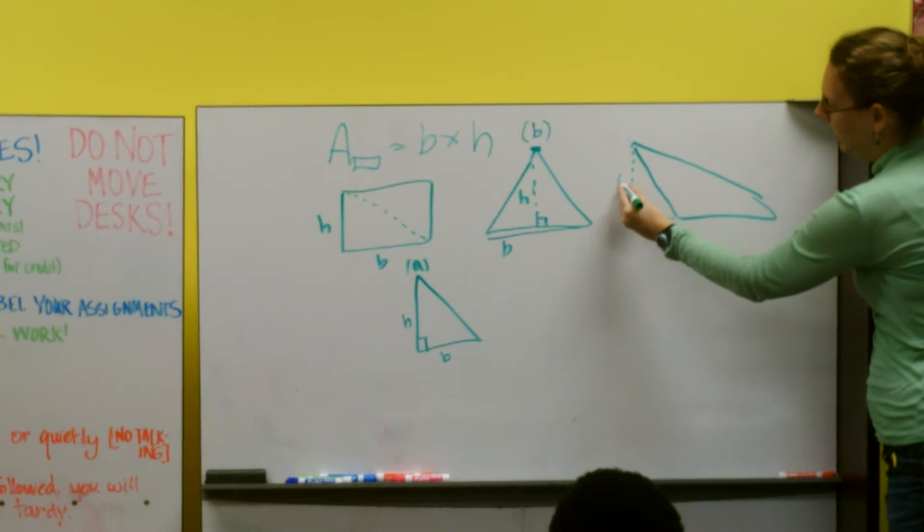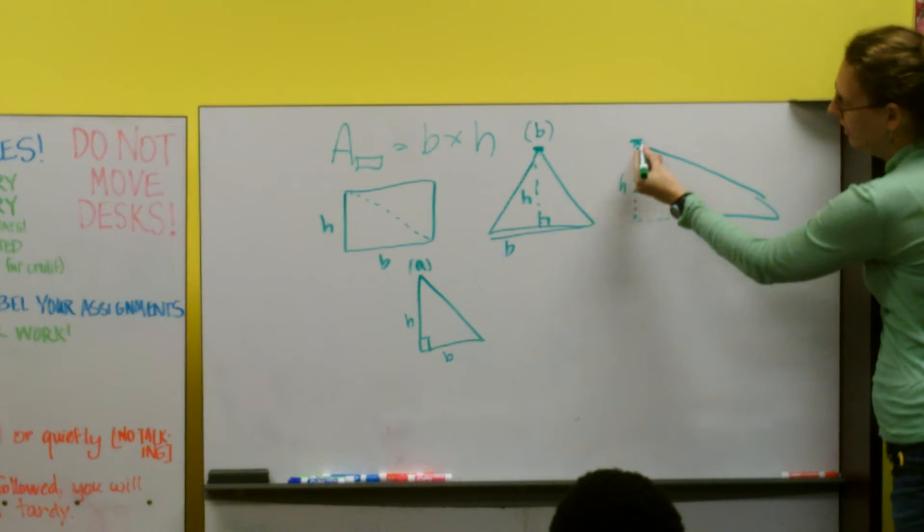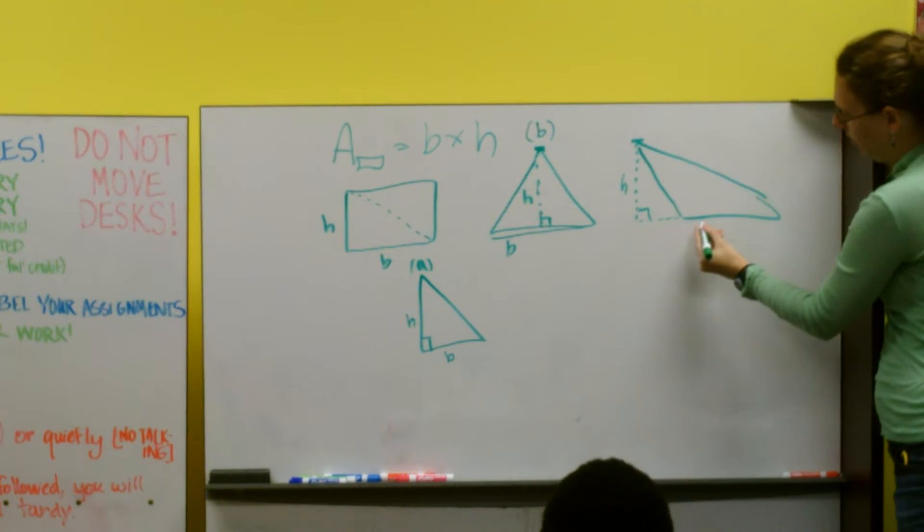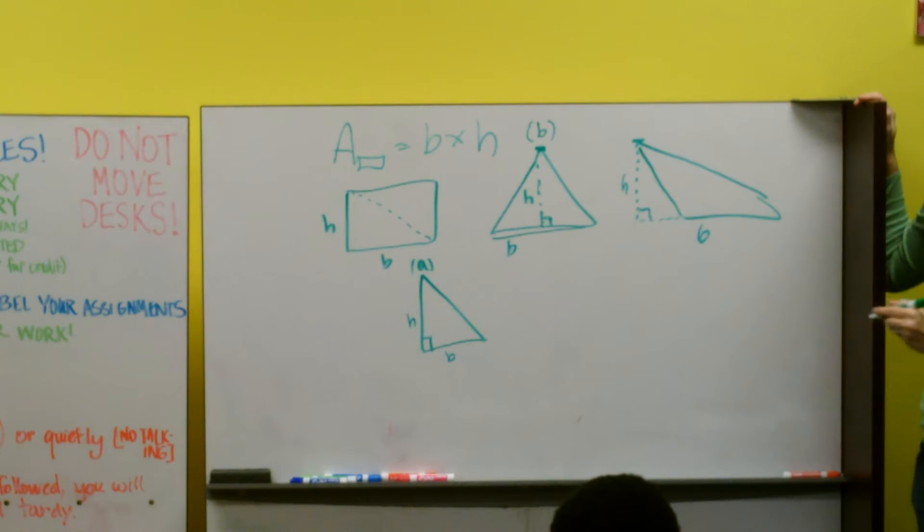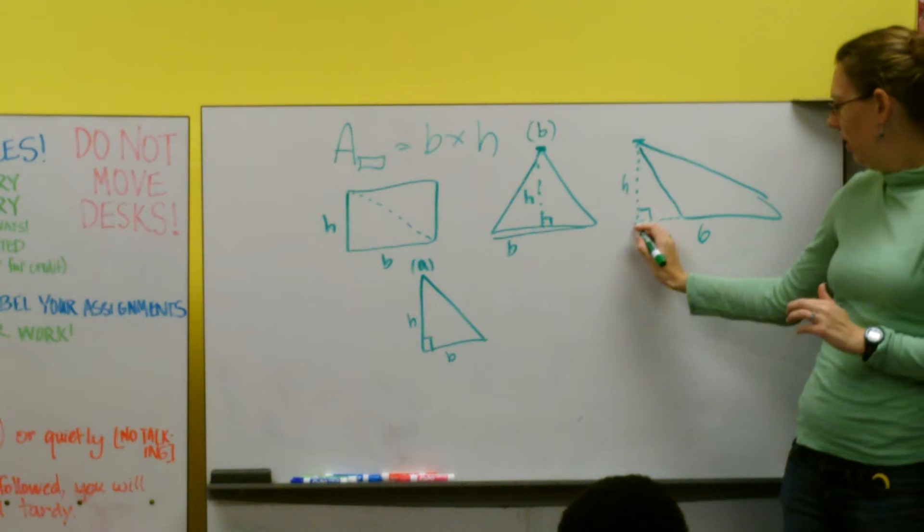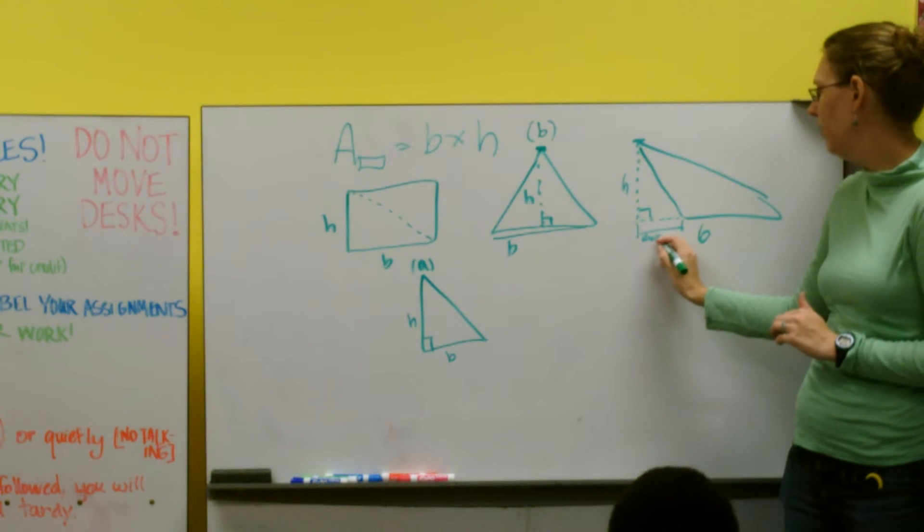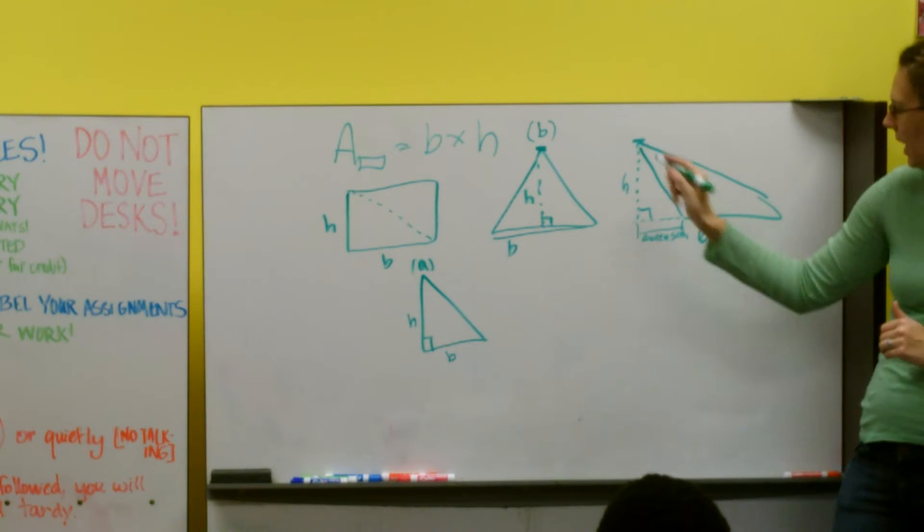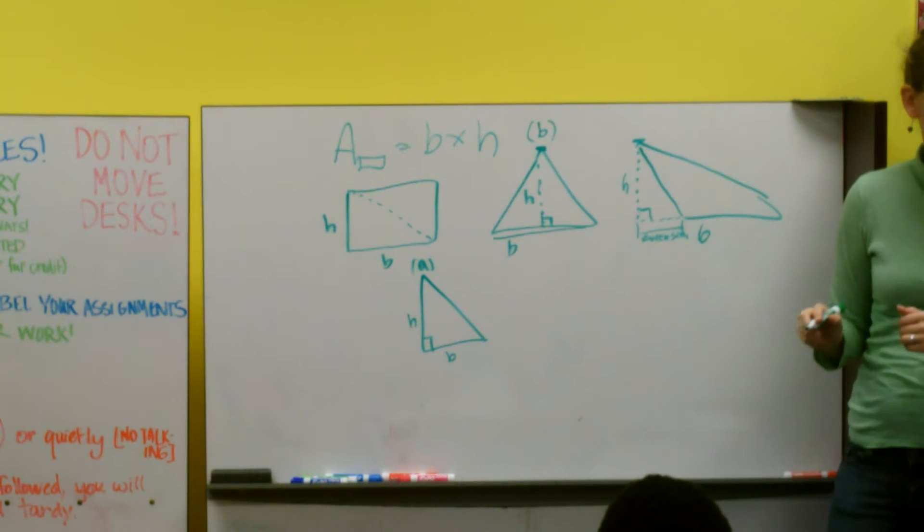So this is still going to be the height. Like I said, it's got to be the tallest point and it's got to make a right angle with your base. So this part we're going to call the extension of the base. Our extension of the base. This part is still our height.